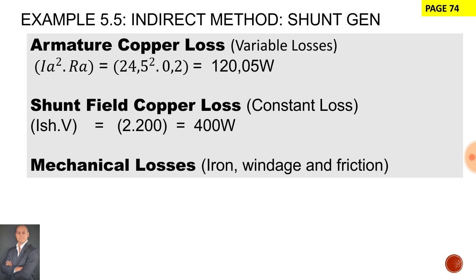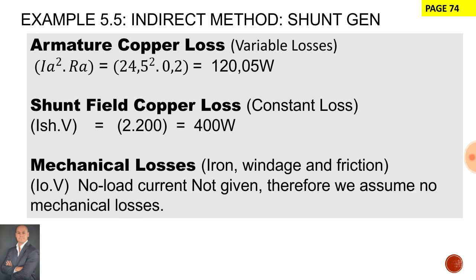Now the mechanical loss consists of iron, windage, and friction. In order to calculate the mechanical loss we can say the no load current multiplied by the terminal voltage. However in this example no load current is not given, therefore we will assume there is no mechanical loss.